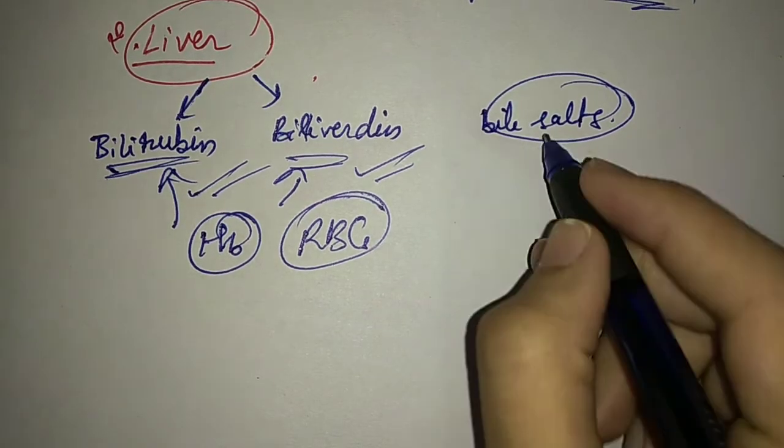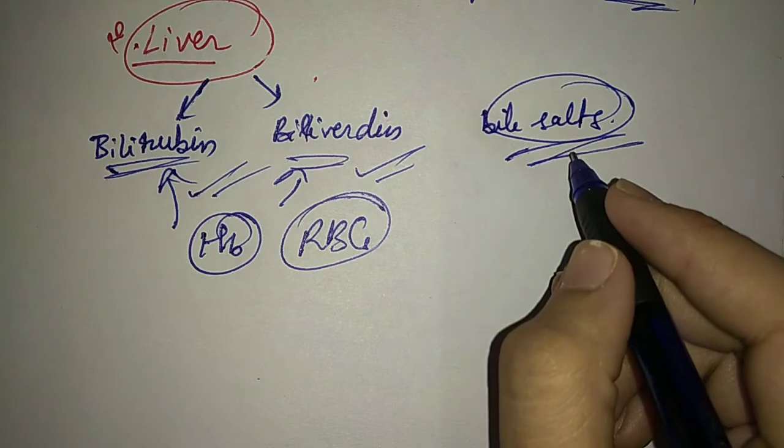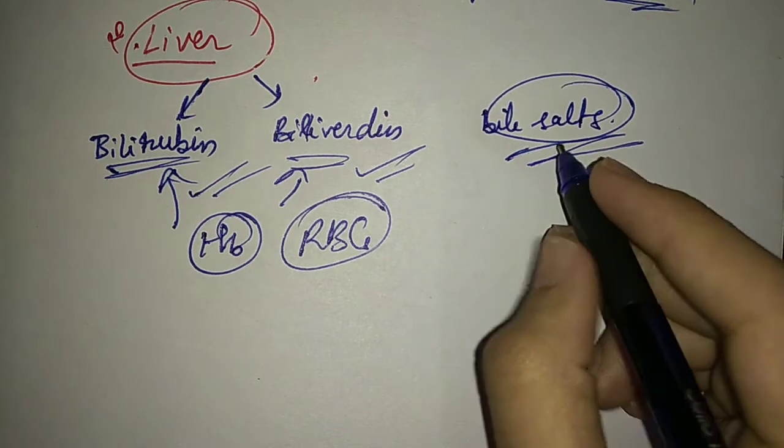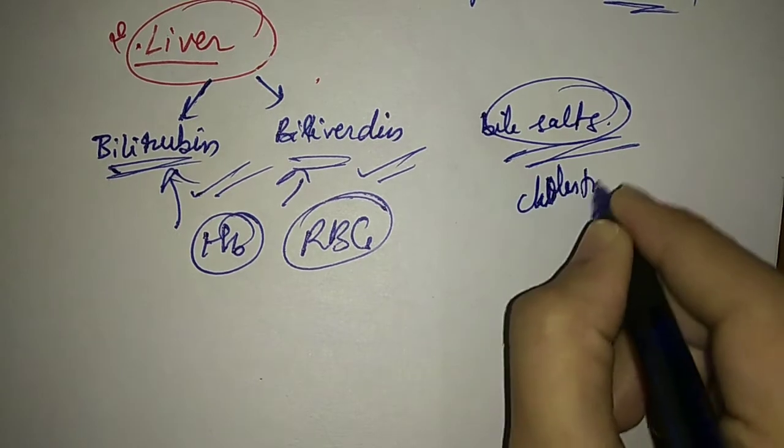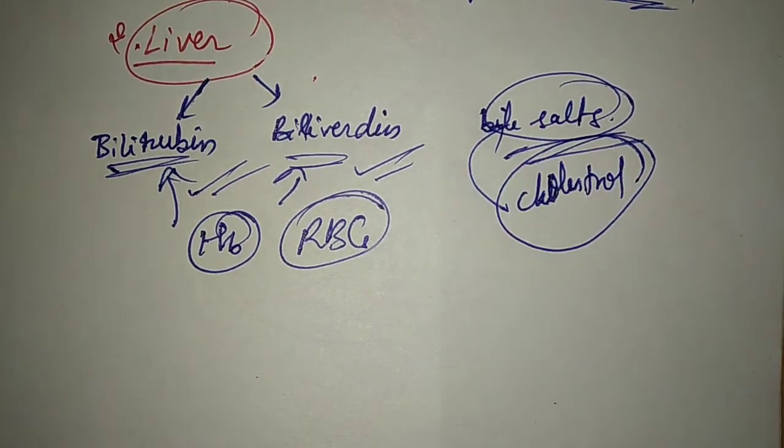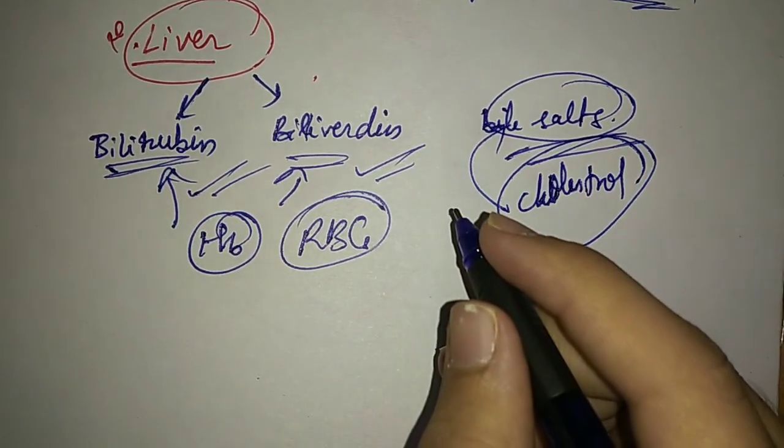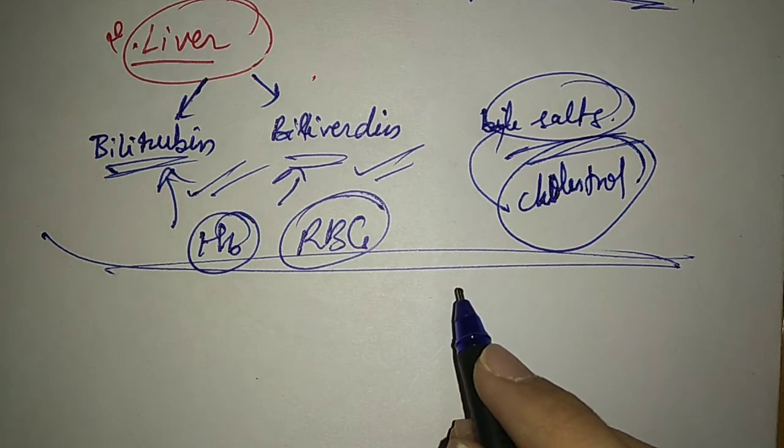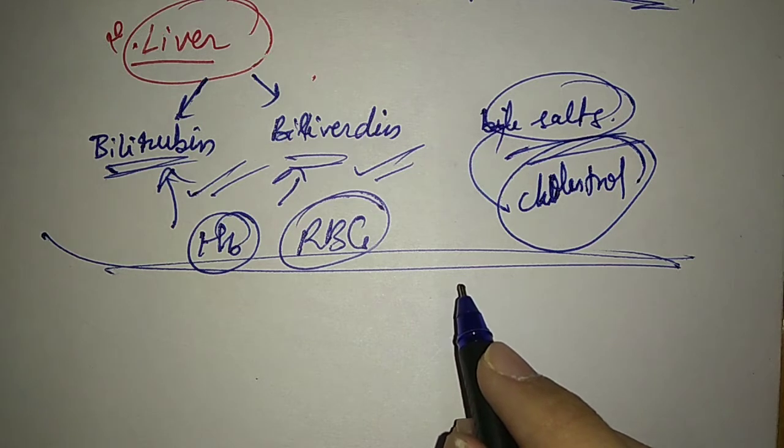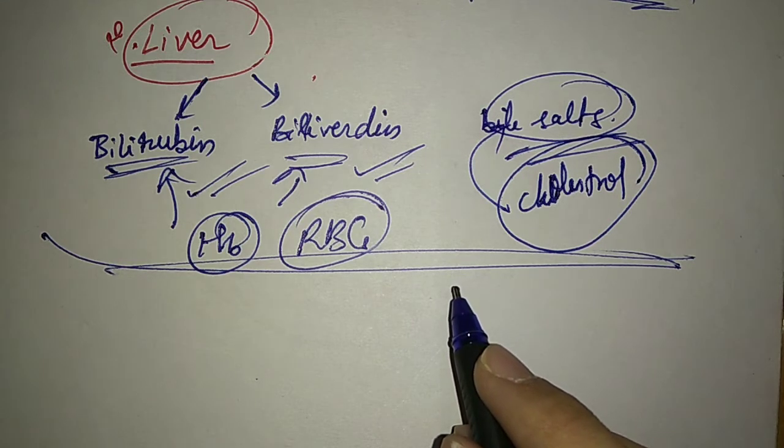Then the bile salts are also present in the bile juice. These bile salts are the derivatives of cholesterol and these are released as excretory products.